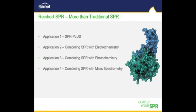Reichert's SPR systems can routinely carry out traditional SPR applications such as kinetic and affinity measurements, but have the added capability to interface with other analytical instruments to increase the application spectrum. This includes a novel SPR setup called SPR+, which allows for coupling to chromatography and mass spectrometry. In addition, we will show how Reichert's SPR systems can be coupled to electrochemistry and photochemistry through Reichert's unique collection of flow cells.